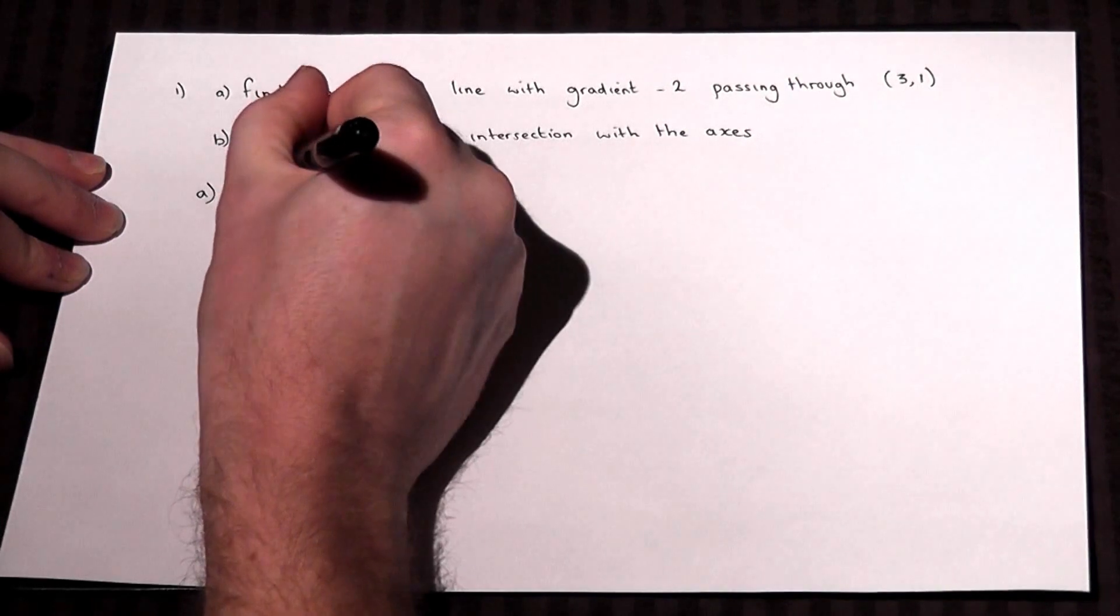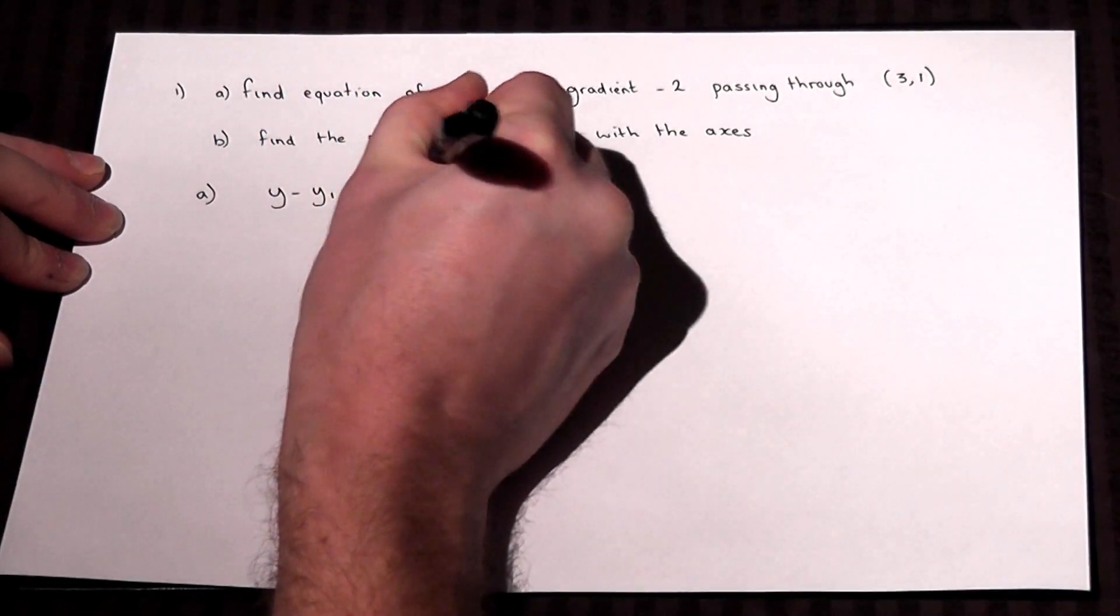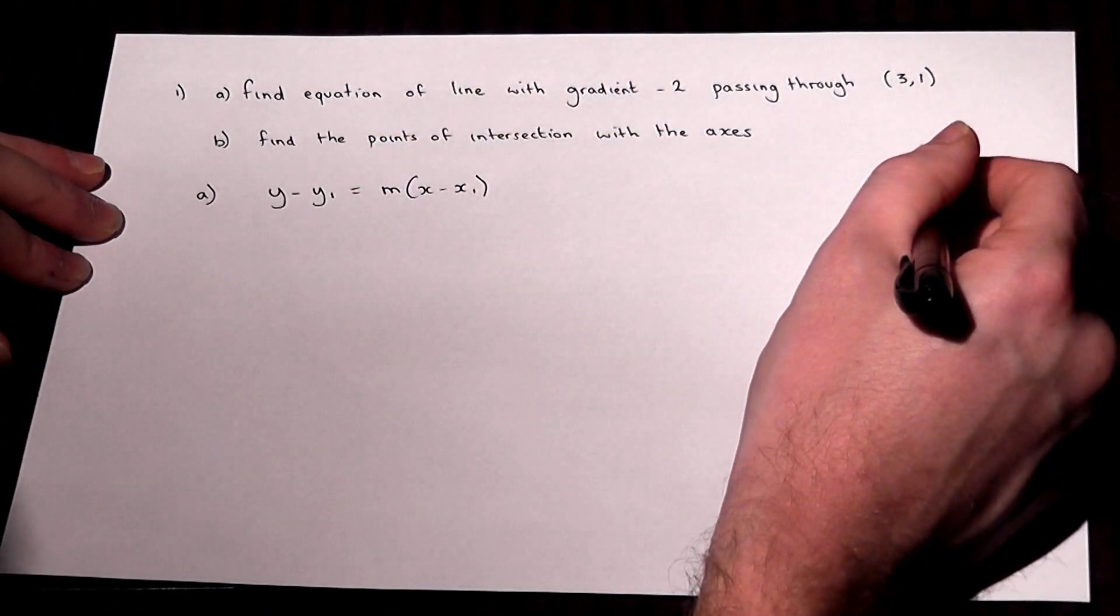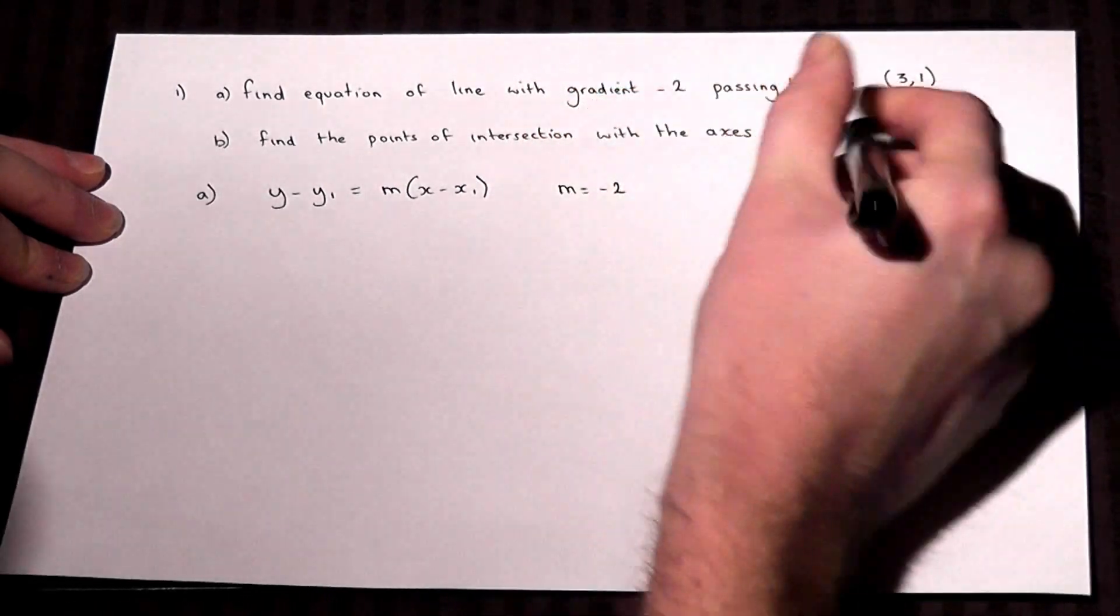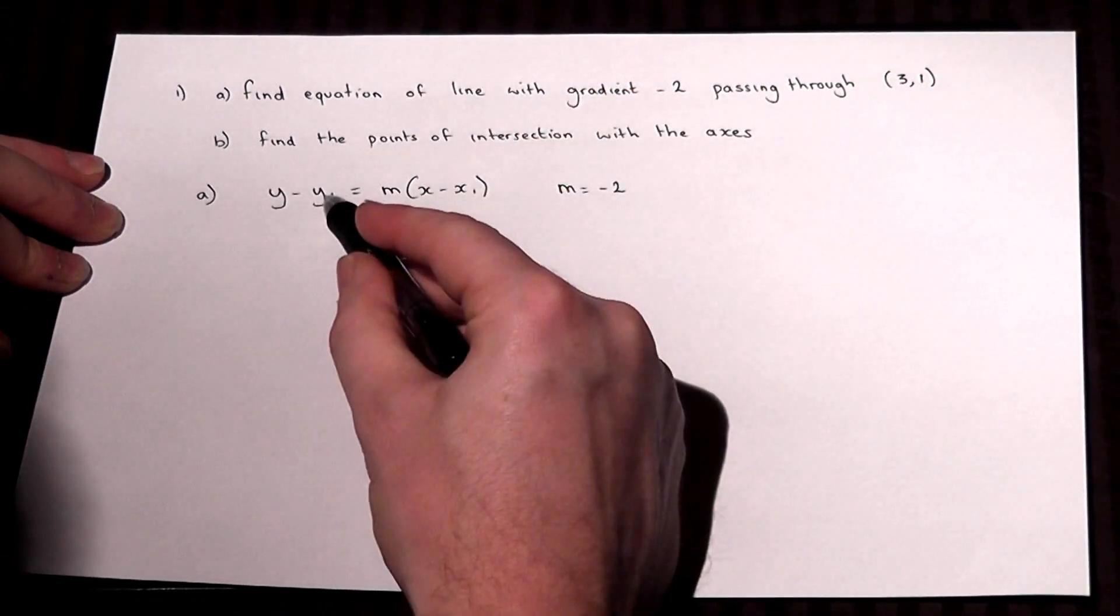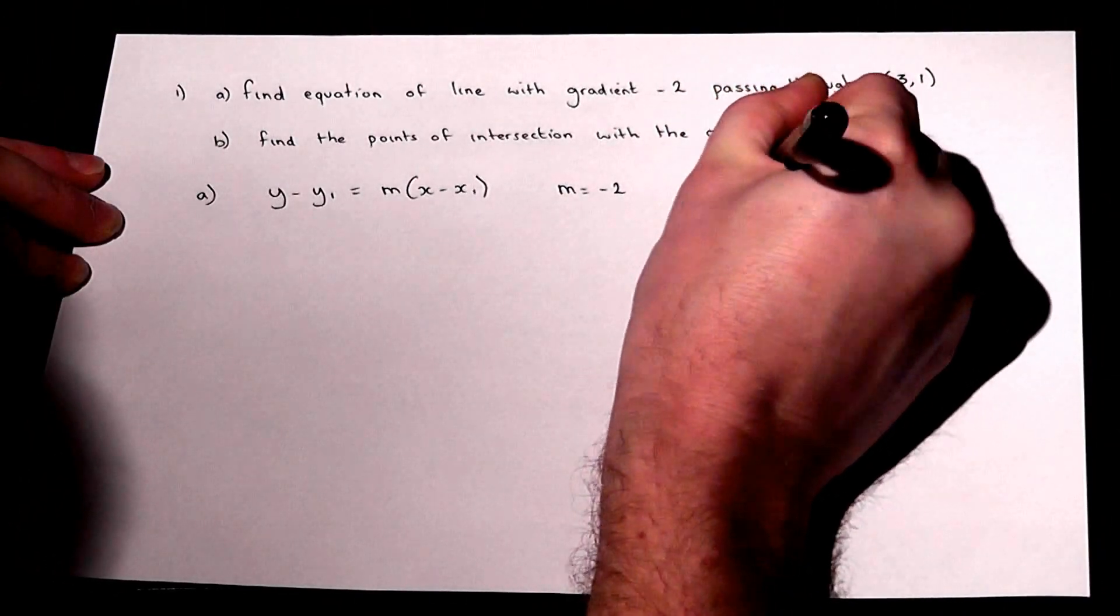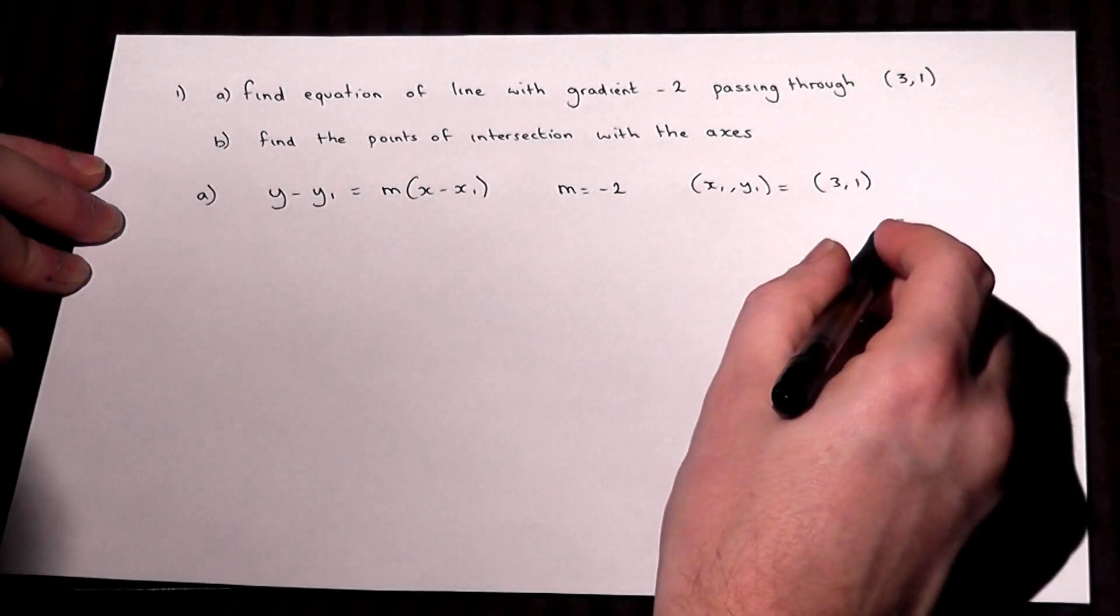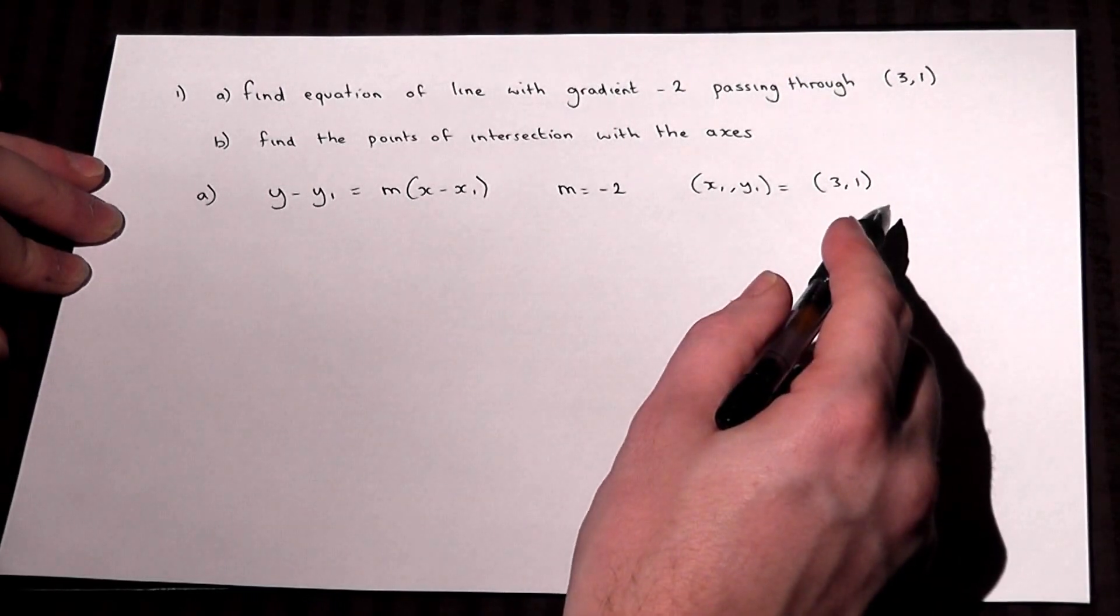any line has got the form y minus y1 equals m times (x minus x1), where m is the gradient, so in this case m would equal minus 2, and x1 and y1 are any given coordinate. So in this case, the coordinate (x1, y1) would equal (3, 1). So the trick is to put these numbers into the general equation of the line.